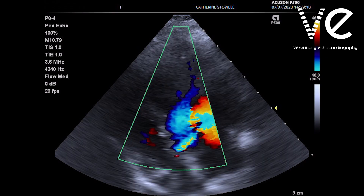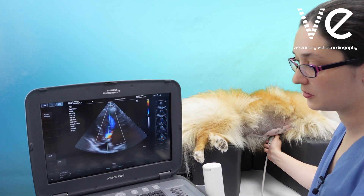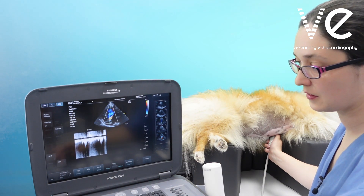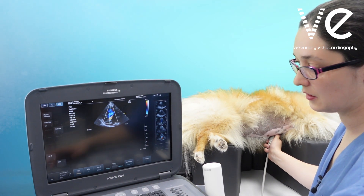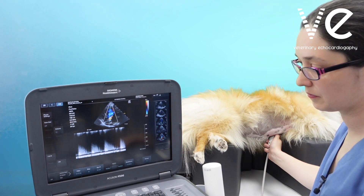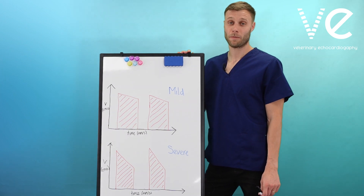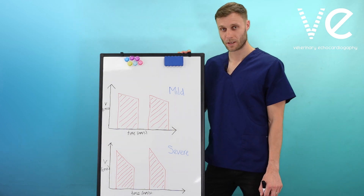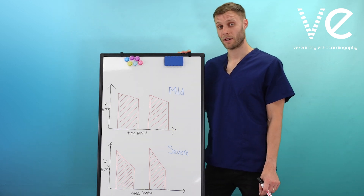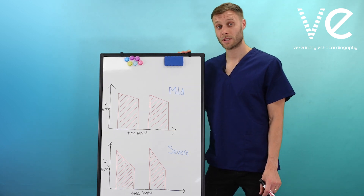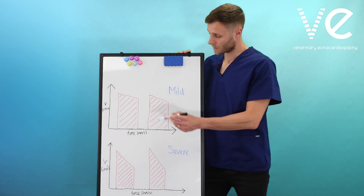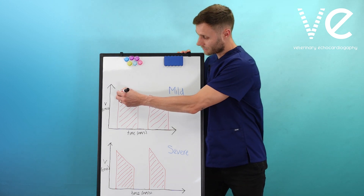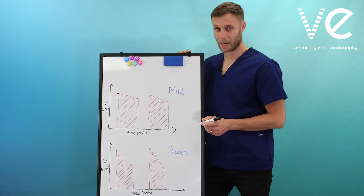Getting as good alignment as possible, place your continuous wave Doppler beam straight down. Bring your baseline down and optimize your scale. Once you've obtained the Doppler through your regurgitant jet, you can measure a pressure half-time to assess the severity. If there is a small orifice area of aortic regurgitation, the pressures between the aorta and left ventricle will equalise gradually, giving a more gradual deceleration slope. You measure from this point to this point to get your pressure half-time.